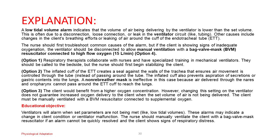Option 1: respiratory therapists should be called to the bedside, but the nurse should first begin stabilizing the client. Option 2: a non-rebreather mask is ineffective in this case because the inflated cuff of the ETT creates a seal against the walls of the trachea, ensuring air movement is controlled through the tube rather than passing around it; air delivered through the nares and oropharynx cannot pass around the ETT cuff to reach the lungs. Option 3: the client would benefit from a higher oxygen concentration; however, changing this setting on the ventilator does not guarantee increased oxygen delivery when the set volume of air is not being delivered. The client must be manually ventilated with a BVM resuscitator connected to supplemental oxygen.